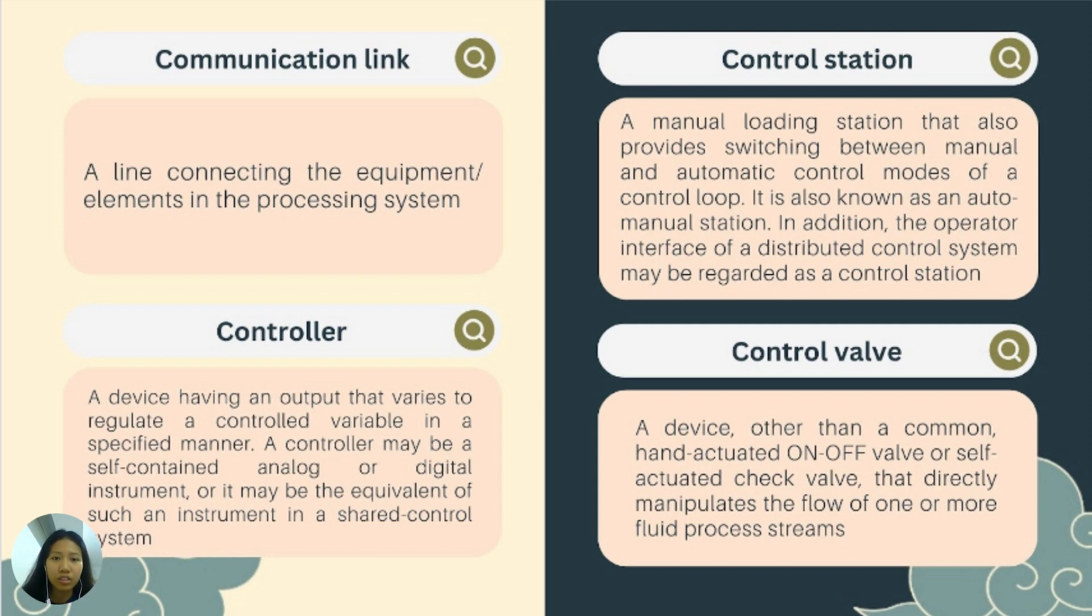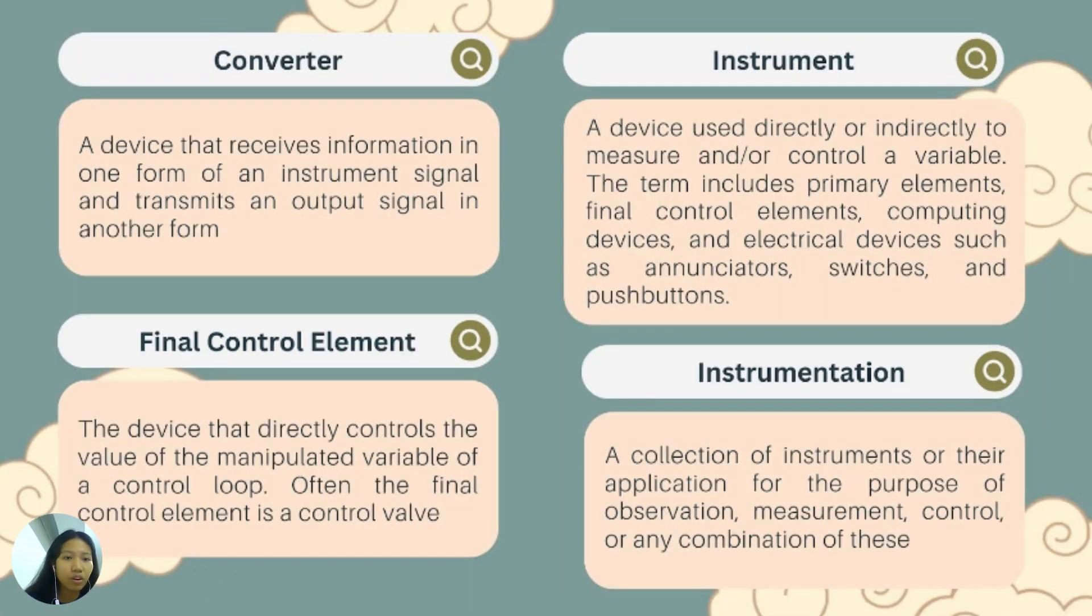Control station. A manual loading station that also provides switching between manual and automatic control modes of a control loop. It is also known as an auto-manual station. In addition, the operator interface of a distributed control system may be regarded as a control station. Control valve. A device other than a common hand-actuated on and off valve or self-actuated check valve that directly manipulates the flow of one or more fluid process streams. Converter. A device that receives information in one form of an instrument signal and transmits an output signal in another form. Final control element. The device that directly controls the value of the manipulated variable of a control loop. Often the final control element is a control valve.